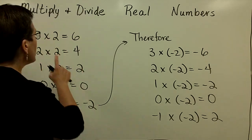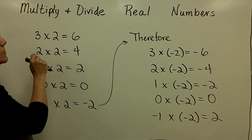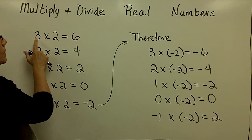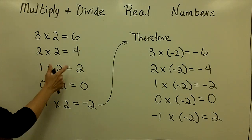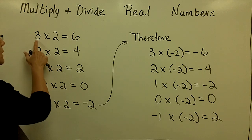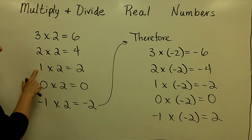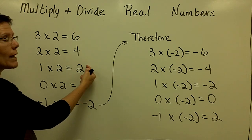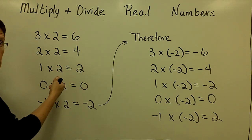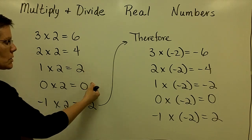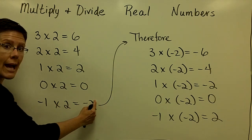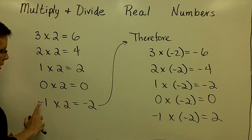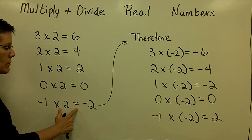Mathematicians saw this pattern when they multiplied two integers together — two positive numbers: 3 times 2 is positive 6, 2 times 2 is positive 4, and 1 times 2 is positive 2. They saw that as they reduced the first factor by 1, their answer decreased by 2, because the other factor was 2. So when I decrease that first factor again by 1, I discover that my answer should go down by 2, and therefore I discover that a negative times a positive is a negative answer.